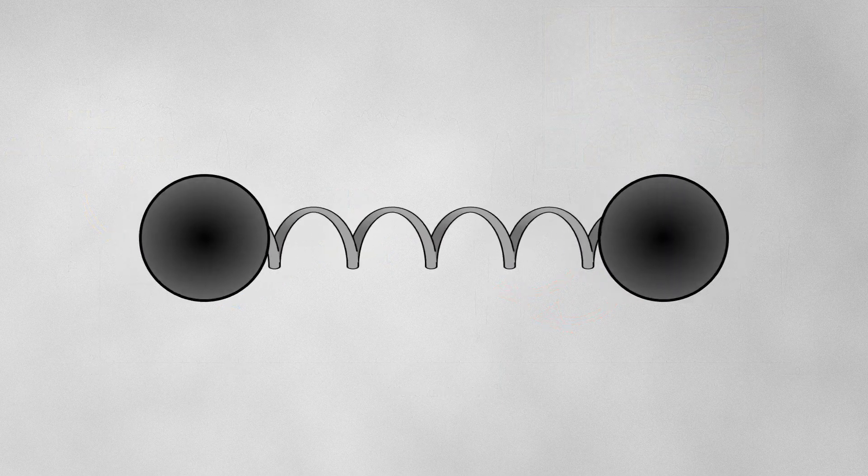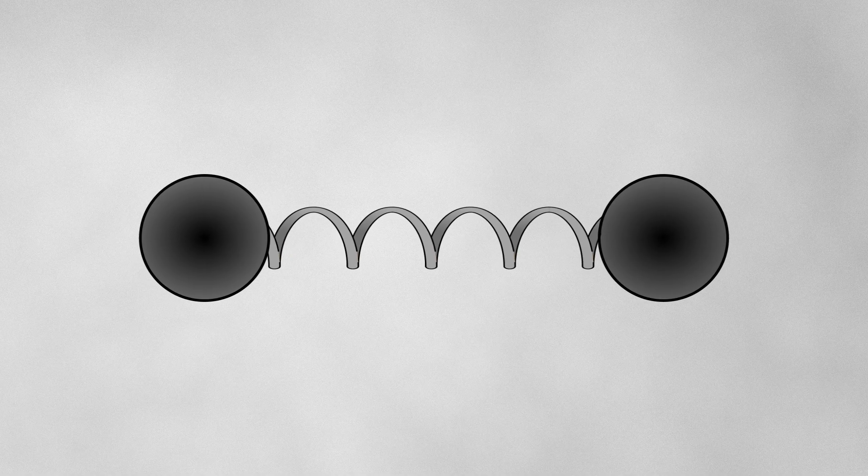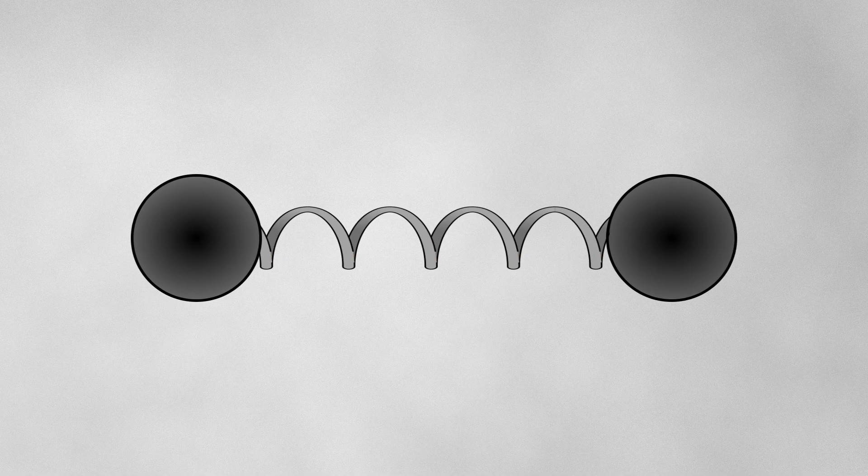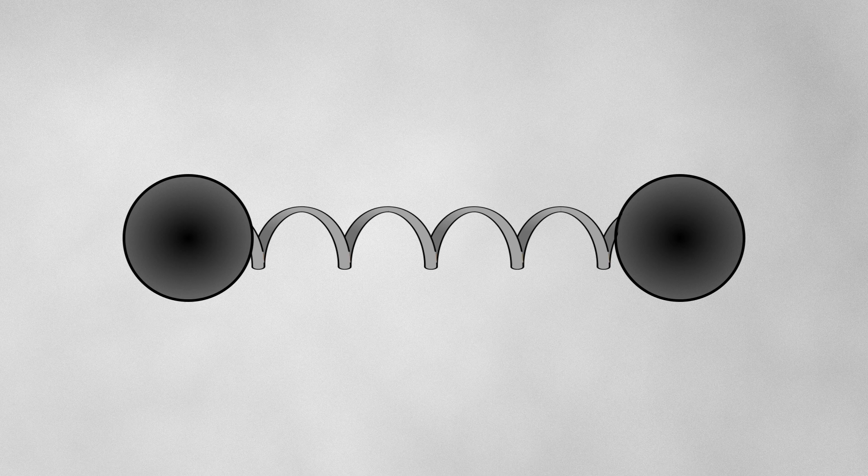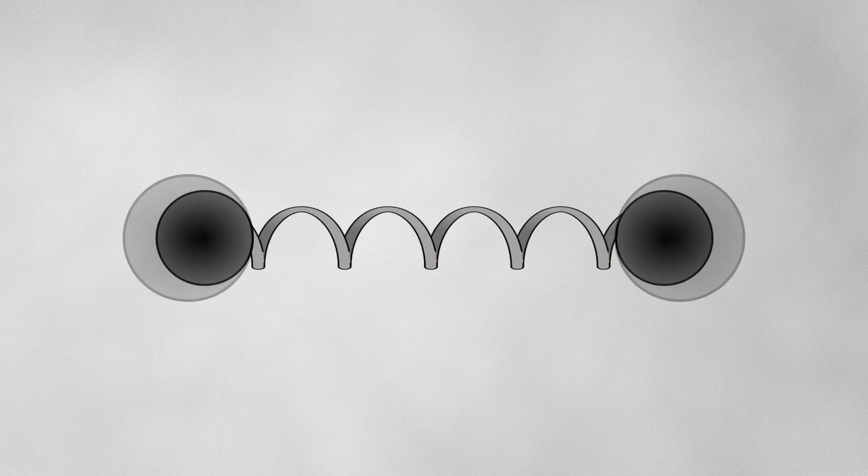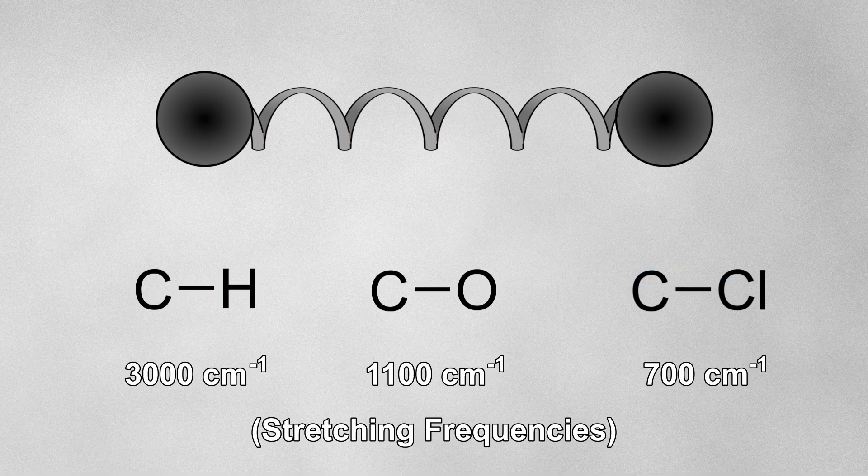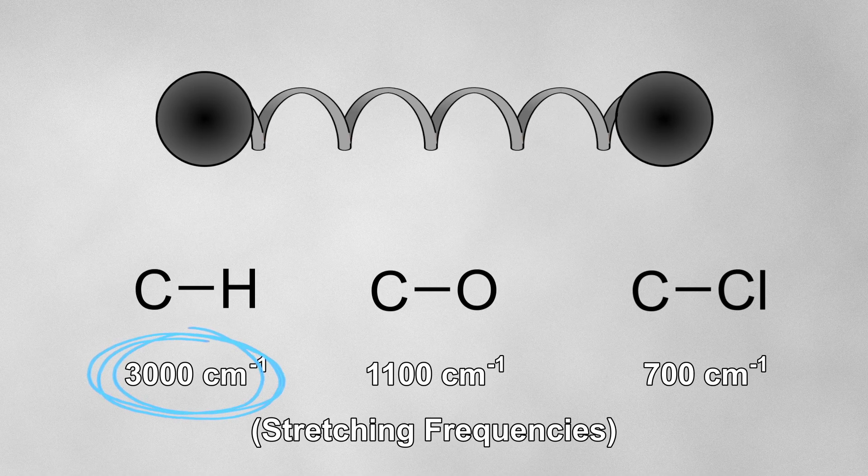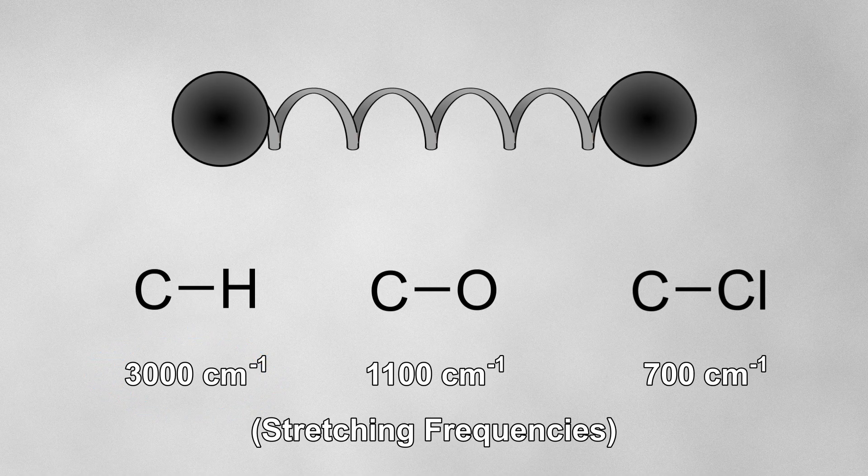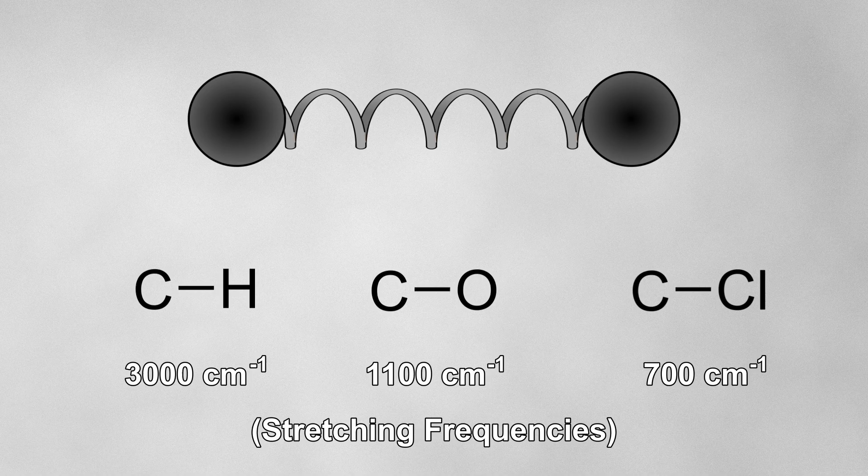Let's go back to stretching vibrations. There are two factors that affect the frequency of a vibration. The first factor is the mass of the atoms. Heavier atoms vibrate slower than lighter atoms. So, if we look at the bonds between carbon and various atoms of increasing mass, we can see that the bonds to lighter atoms result in absorptions at higher IR frequencies. In other words, more energy is required to excite these bonds to the more energetic, higher frequency vibrations.